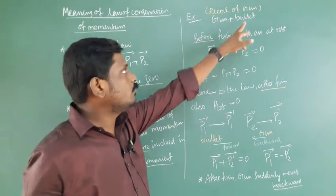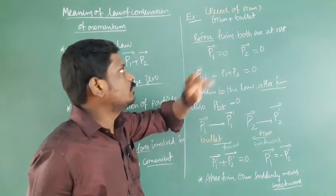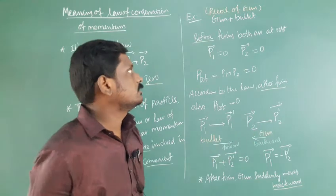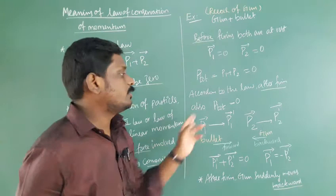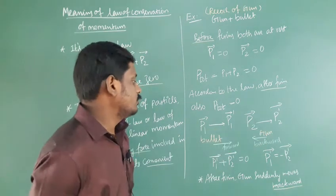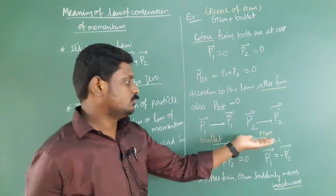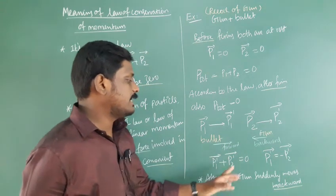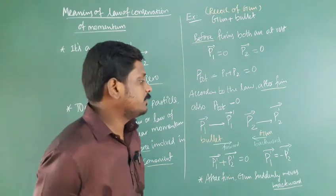At the same time, bullet exerts a force on the gun, so that momentum changes from P2 to P2 dash. The bullet moves in forward direction, then gun moves in opposite direction. P1 dash plus P2 dash equals zero. So P1 dash equals minus P2 dash.